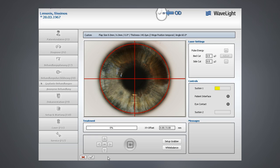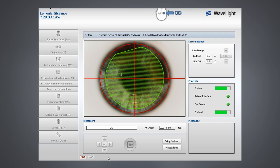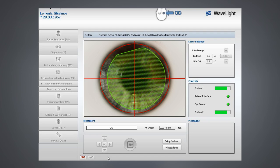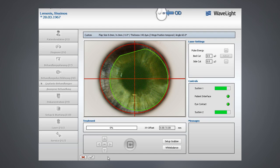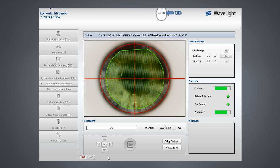The WaveFlight FS200 femtosecond laser offers the physician the unmatched ability to adjust the placement of the flap even after the suction ring has been applied. By shifting the placement grid before the flap is created, the physician may customize flap placement to best fit the ablation profile of their patient.